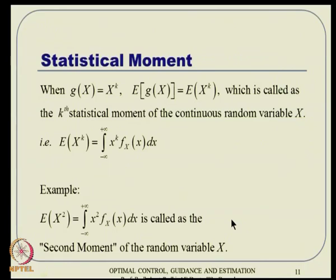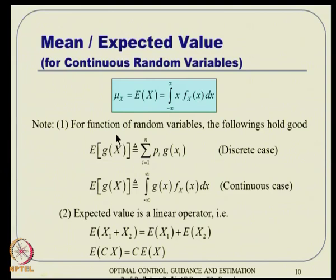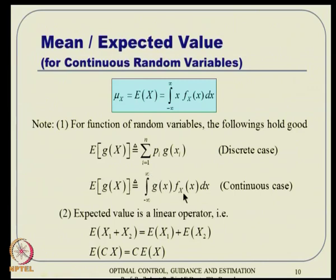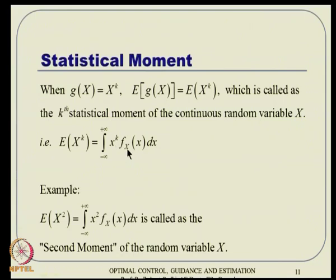There is something called the statistical moment. When g(x) = x^k, the expected value of x^k is the k-th statistical moment of the continuous random variable X — that is, the integral from minus infinity to plus infinity of x^k * f_X(x) dx. For example, the expected value of x^2 is the second moment, and the expected value of x (k=1) is the first moment, which is the mean.